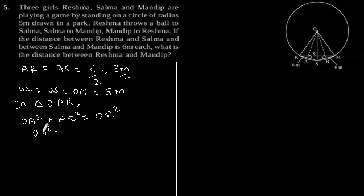OA square plus AR is 3 meter and OR is 5 meter. So, this gives OA square is equal to 25 minus 9 which gives 16 which gives OA is equal to 4 meter.